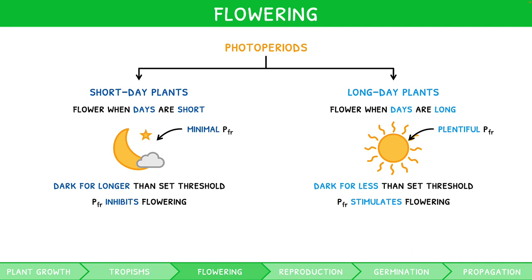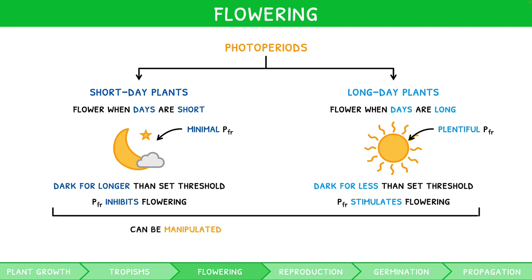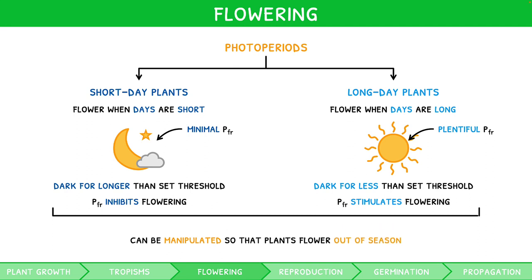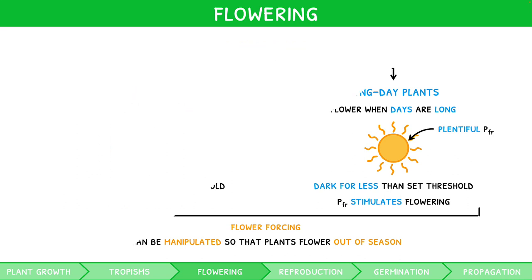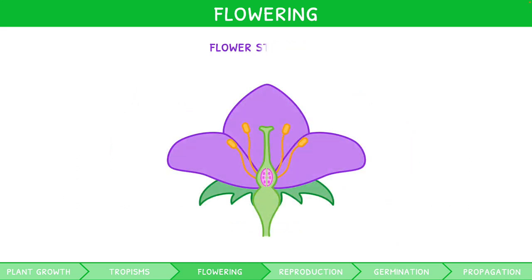Like most biological processes, humans have found ways of manipulating this natural process. Some plants can be made to flower out of season, known as flower forcing. The process is as simple as increasing or decreasing the amount of dark in the day to trick the plant into thinking it is in short day or long day periods respectively. For your IB Biology exam, you are expected to draw and annotate a flower. This should be familiar from your prior knowledge.